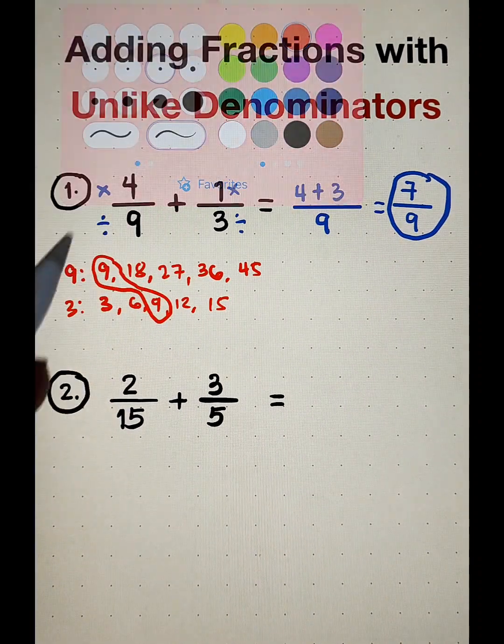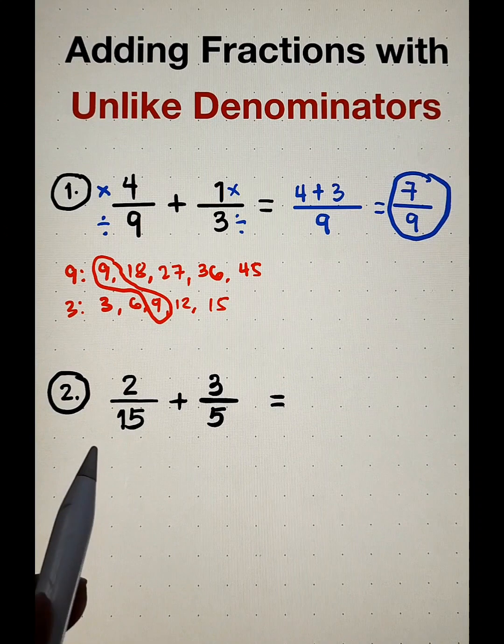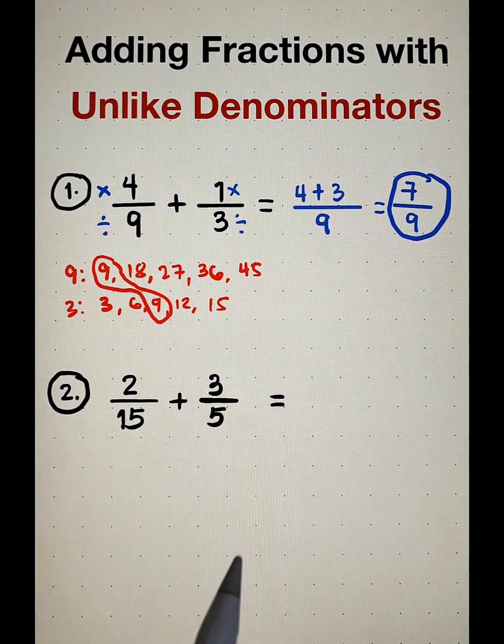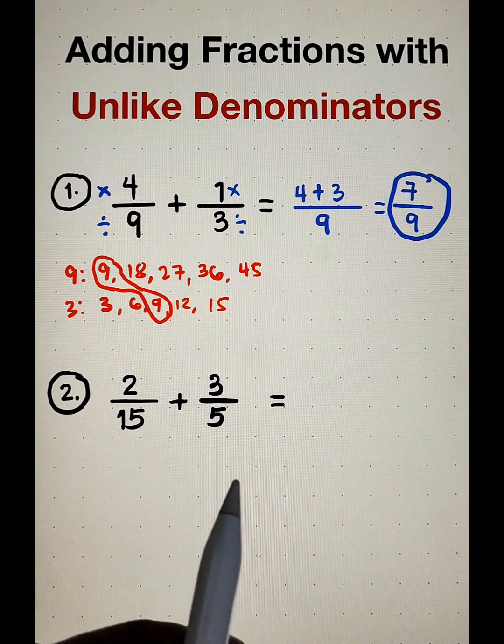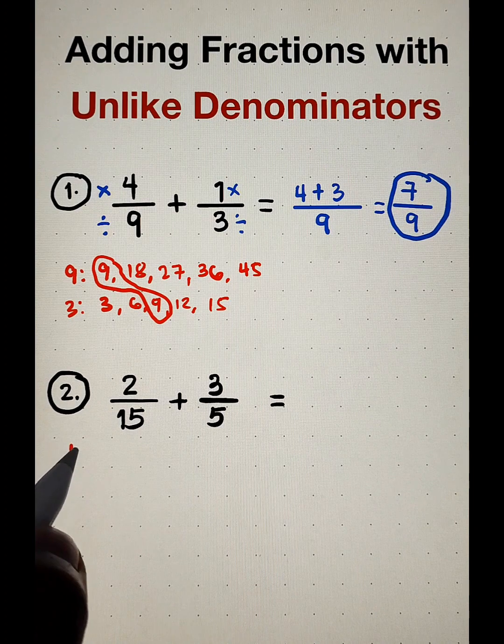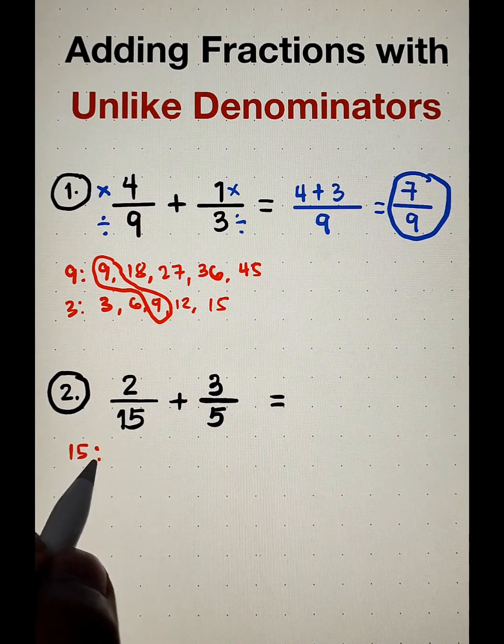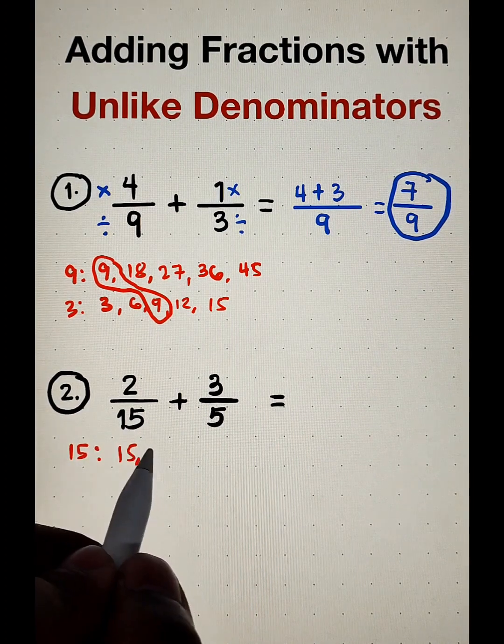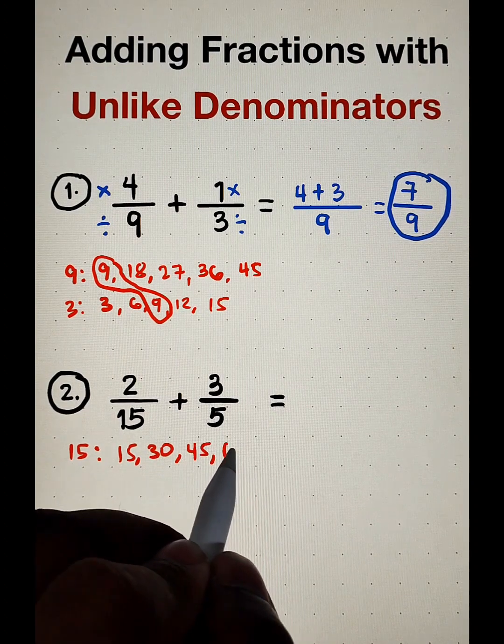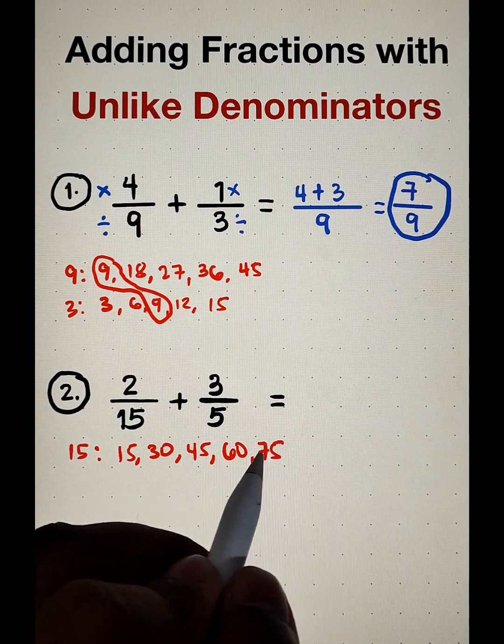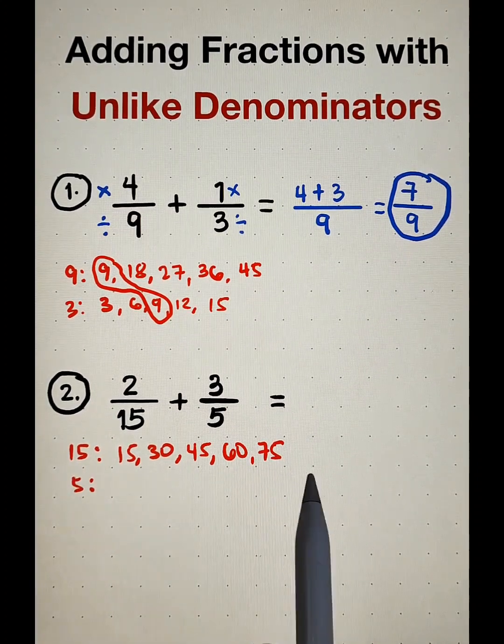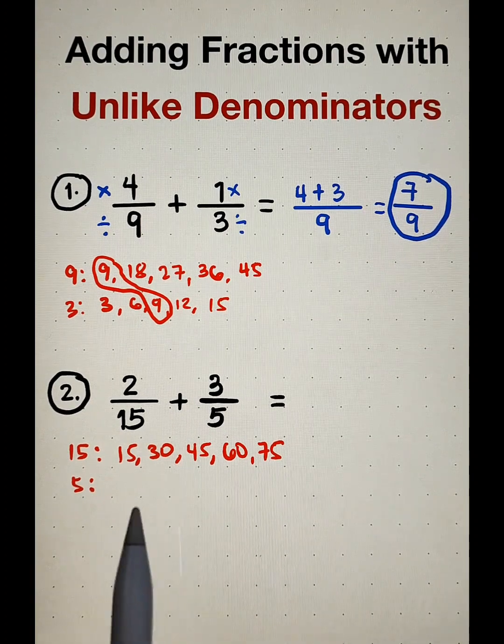So let us proceed with item number 2. For number 2, we have 2 over 15 plus 3 over 5. Now, let's list down all the multiples of 15 first. The multiples are 15, 30, 45, 60, 75, and then for 5. Again, if this is not enough, you can extend the multiples.